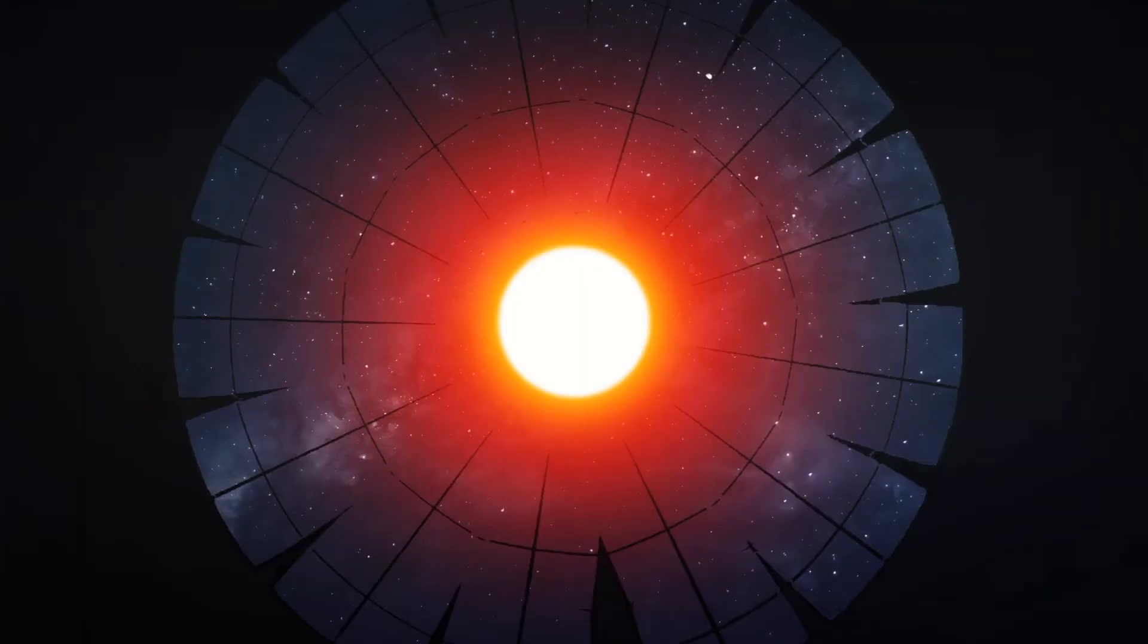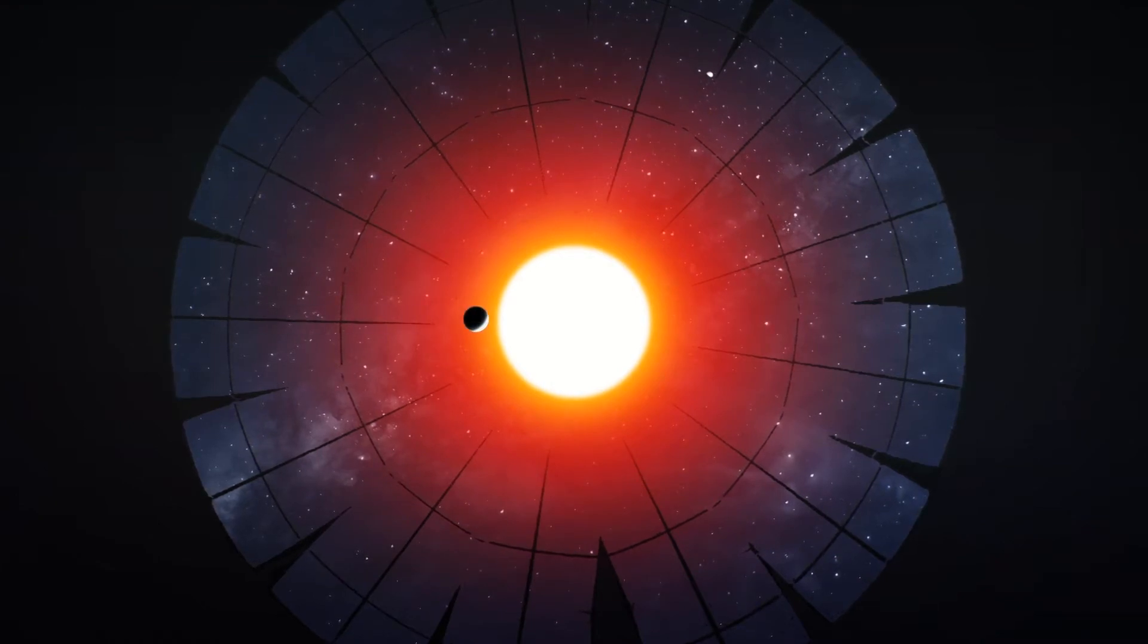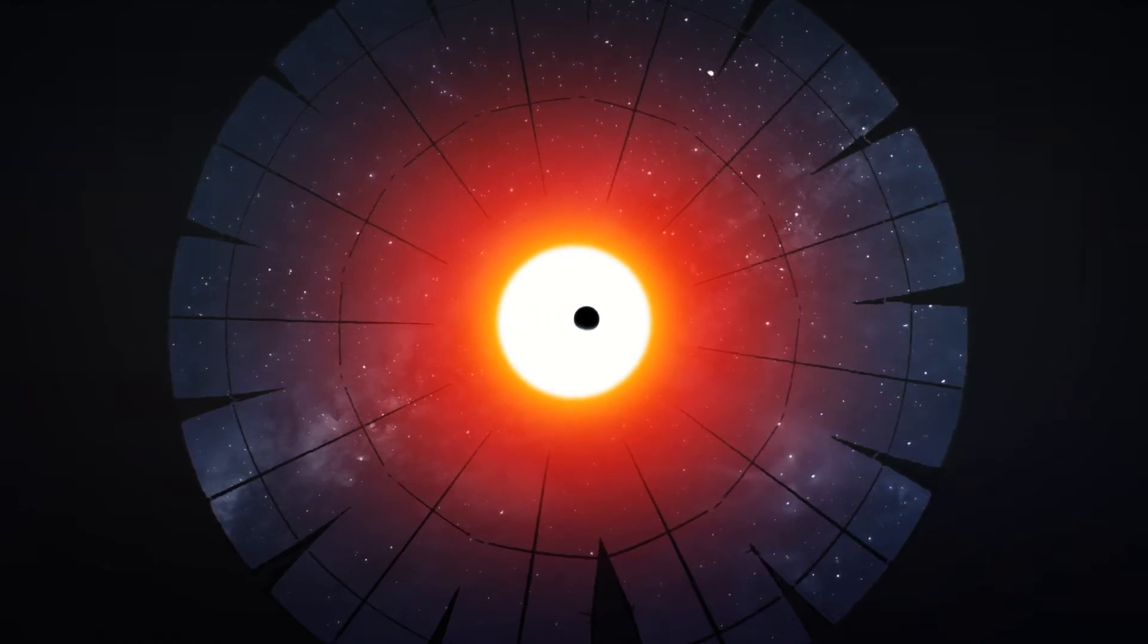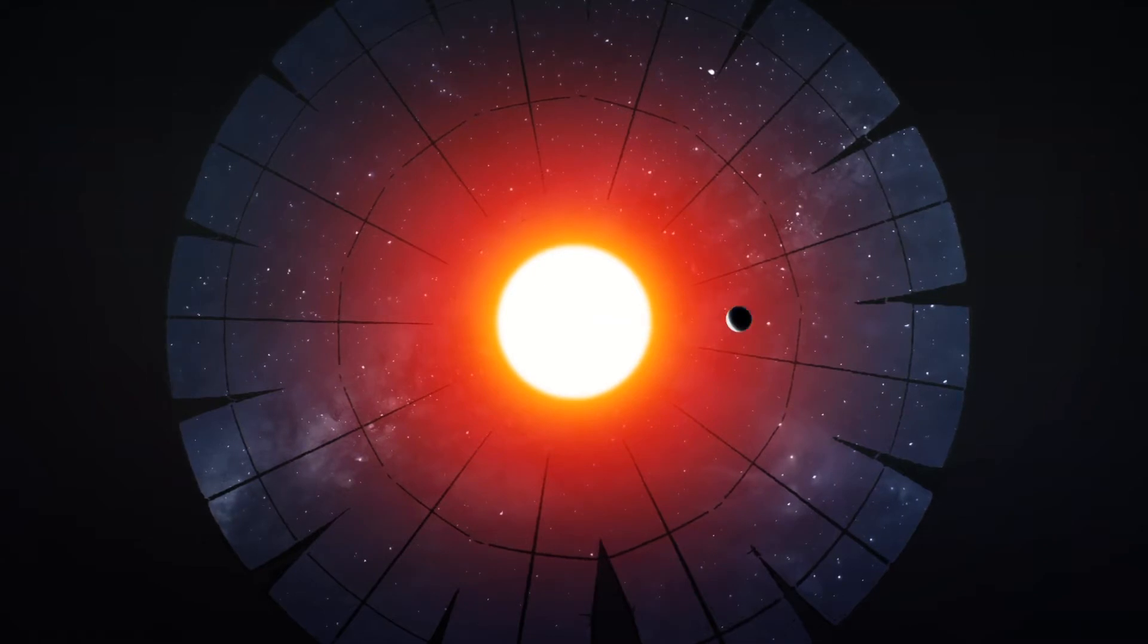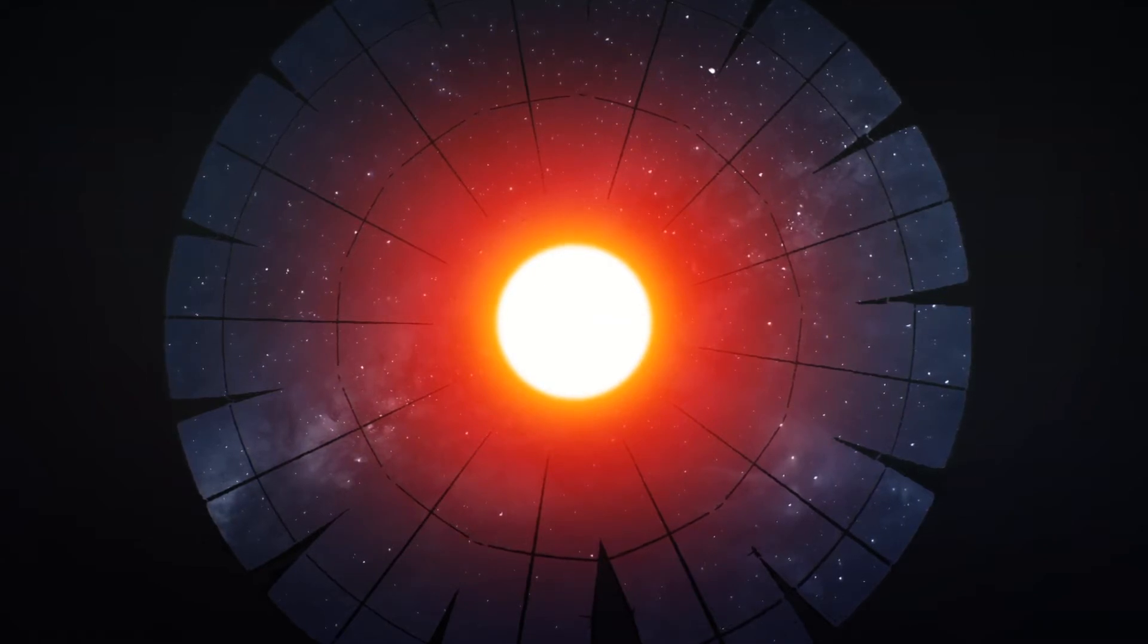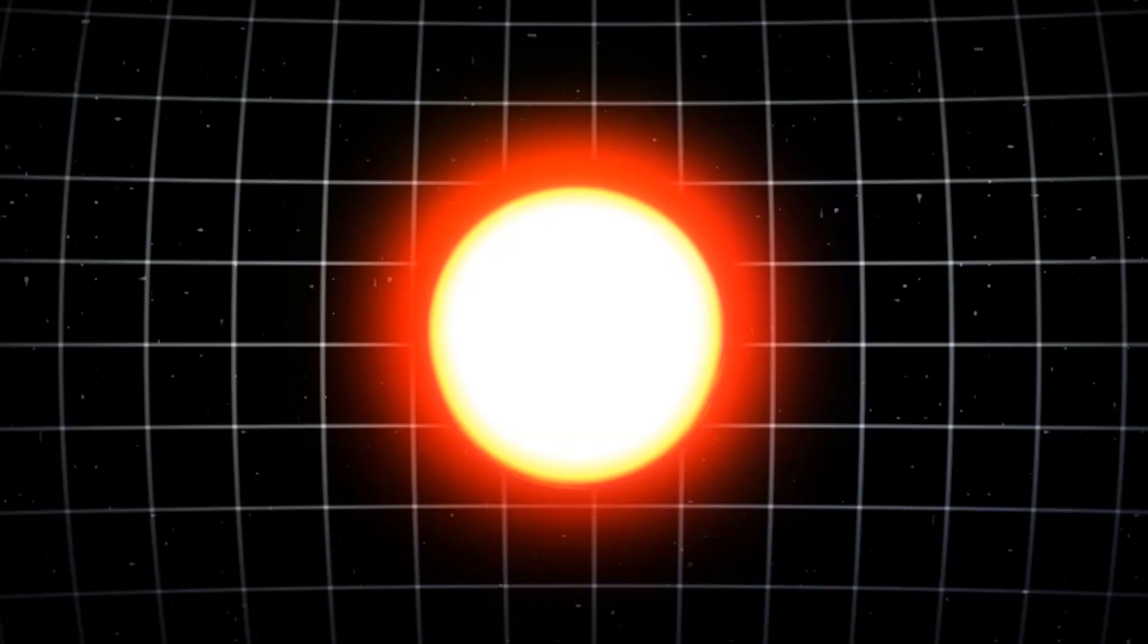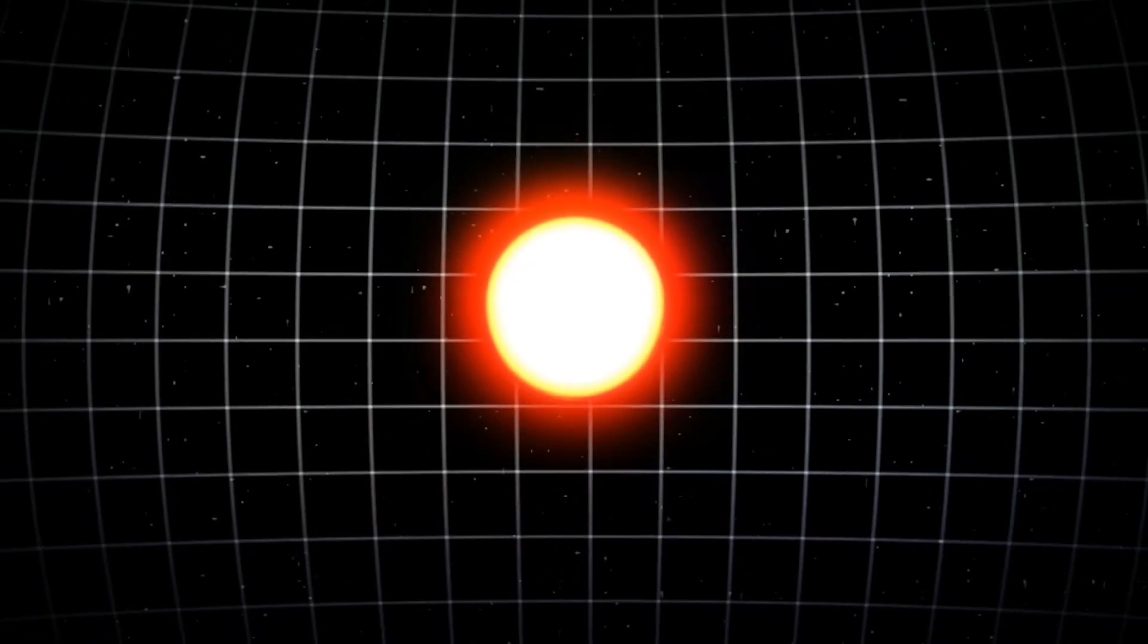NASA explains that TESS observes large regions of the sky known as sectors for 27 days at a time. TESS identifies and tracks changes in stellar brightness caused by an orbiting planet passing in front of its star. During recent observations, TESS tracked a total of three planets.